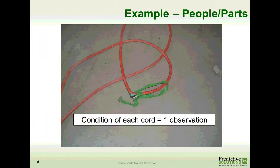As an example of people and parts, here we have an electrical cord. The condition of that cord is one observation. If there were ten cords, that would be ten observations. For measuring hard hats, ten people equals ten observations.